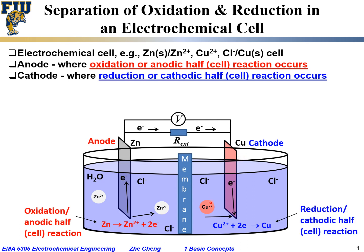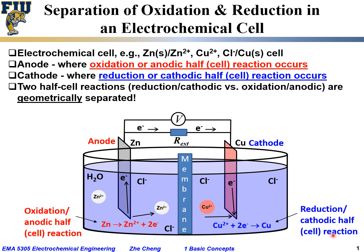And then, on the right-hand side, copper ions combined with the electrons to become copper metal. This we call the cathodic or reduction half-cell reaction. And you see, in this case, we have clearly geometrically separated the two reactions.